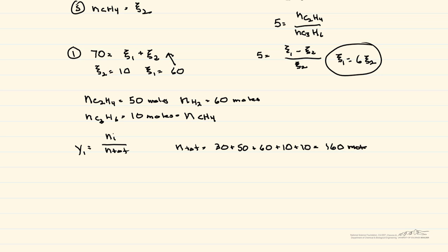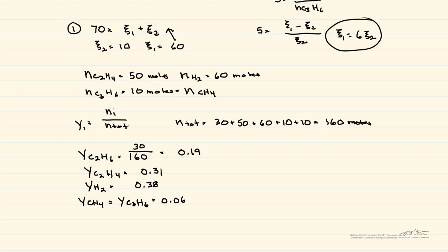The mole fraction y_i = n_i / n_total. For ethane: y = 30/160 = 0.19. The mole fractions of all components add up to 1. This video demonstrates how to use the extent of reaction to solve material balances involving multiple reactions — the more reactions, the more extents (squiggles) introduced as variables.